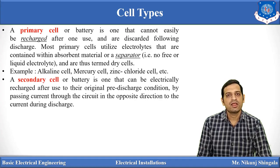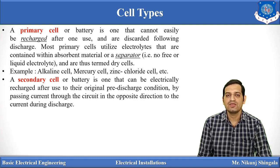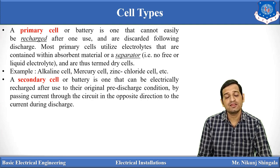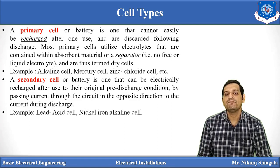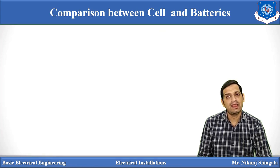A secondary cell or battery is one that can be electrically recharged after use to the original pre-discharge condition, by passing current through the electrolyte solution in the opposite direction to that during discharge. Once a secondary cell is discharged, it can be recharged by passing current in the opposite direction. Examples of secondary cells are the lead acid cell, nickel-ion, and alkaline cell.